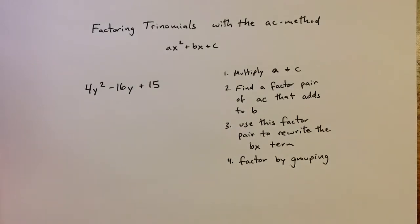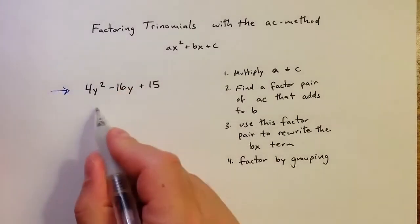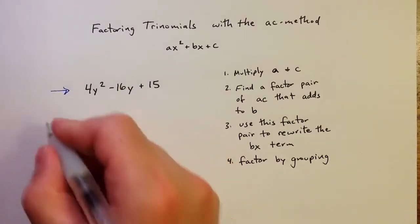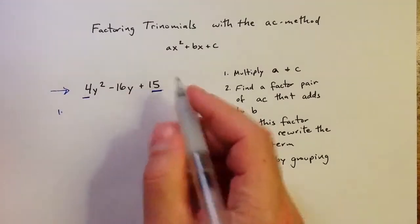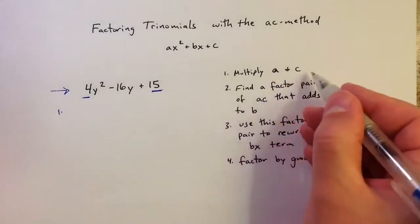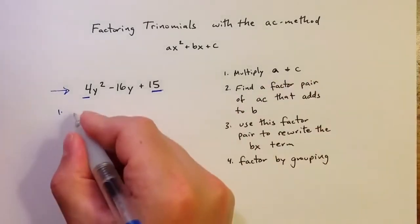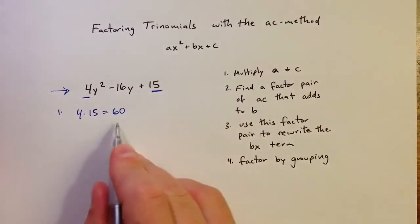To apply this process, let's look at an example. If we have 4y squared minus 16y plus 15, the first step, I want to identify a and c, so 4 and 15 would be a and c. I want to multiply them together. 4 times 15 is 60, positive 60.